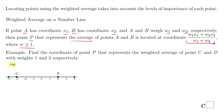Let's see this first example. Find the coordinate of point P that represents the weighted average of points C and D, with weight 1 and 3, respectively. Point C is located at negative 3. Point D is located at 2. The weight of point C is 1, and the weight of point D is 3.